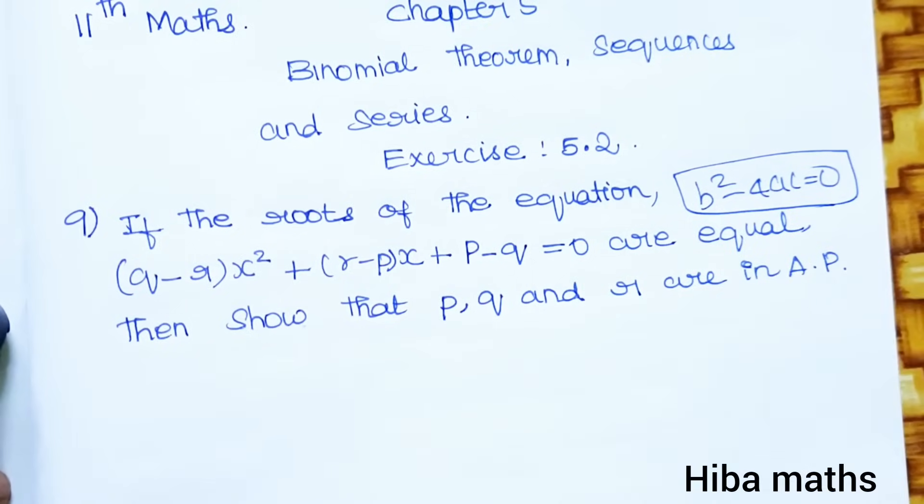For equal roots, we use the condition b² - 4ac = 0. Using this condition, we substitute the values and solve the problem to prove that p, q, r are in A.P.